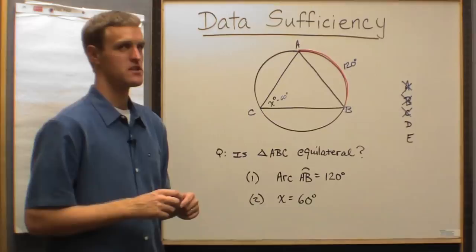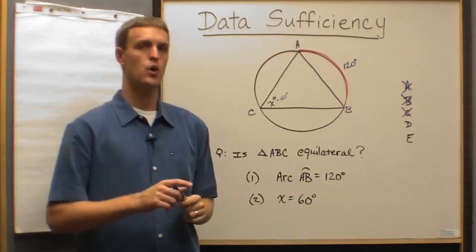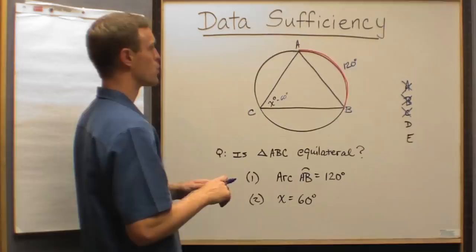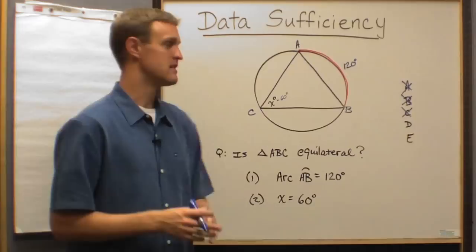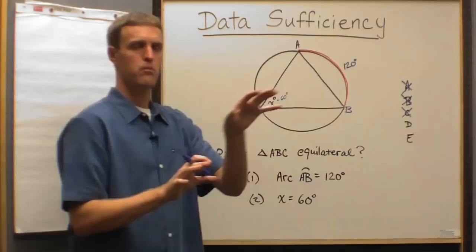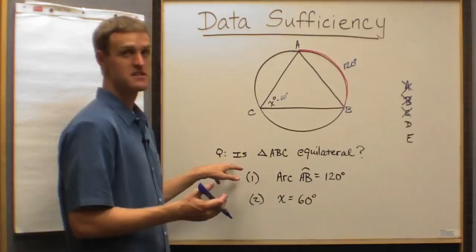The secret is what I said earlier. I reminded you that the figure is not necessarily drawn to scale. And so your instinct needs to be, can I manipulate this thing? Can I change things? Can I somehow redraw things to where I get conflicting outcomes? Remember, that's our objective. If we can't get a conflicting outcome, then it's sufficient. But if we can show two different scenarios that will produce two different answers, then we don't have enough information.